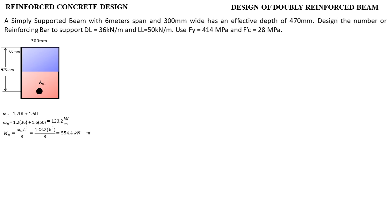Now that we have the ultimate moment, we need to get the nominal moment. The nominal moment is equal to MU divided by 0.9, because we are designing this beam as tension-controlled. For tension-controlled sections, the reduction factor is 0.9. This gives us Mn = 616 kN·m.